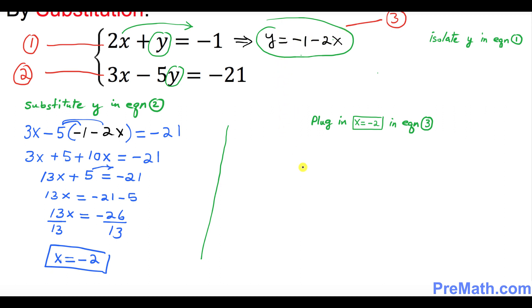Our equation 3 is y equals negative 1 minus 2x. Wherever you see x we're going to replace it by negative 2.